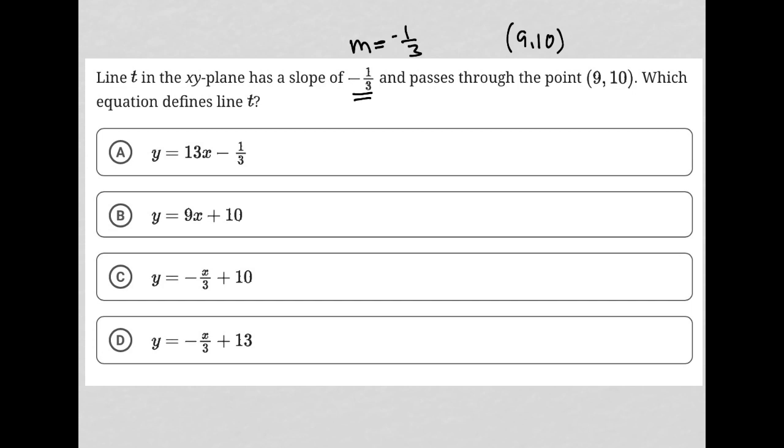I think the best way to do this is to start off with slope-intercept form, Y equals MX plus B.